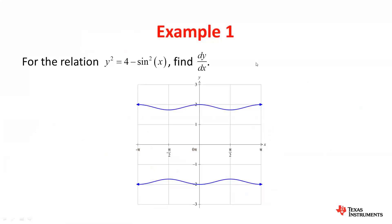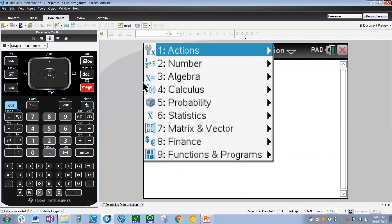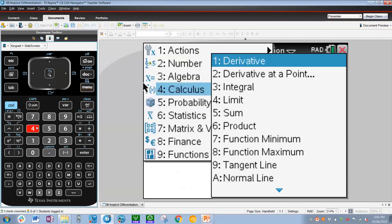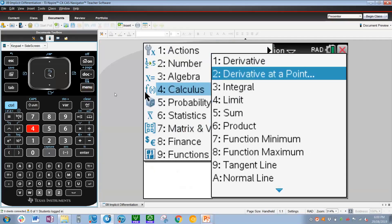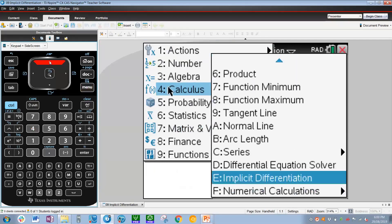The implicit differentiation has a function on the calculator. To get that, we're going to go to Menu, 4 for Calculus. You don't see it on the options here, so the best way is to press up and go to E, which is implicit differentiation. Alternatively, we can simply press Menu then E.